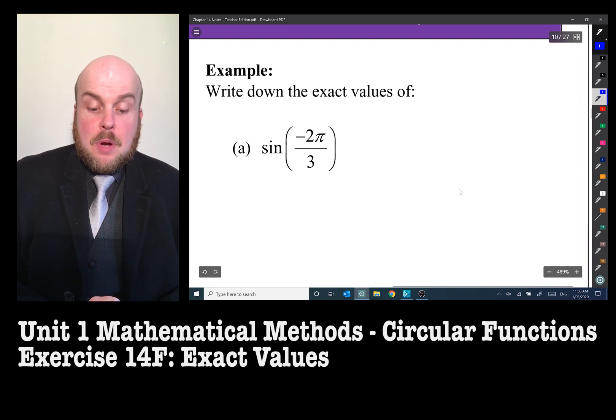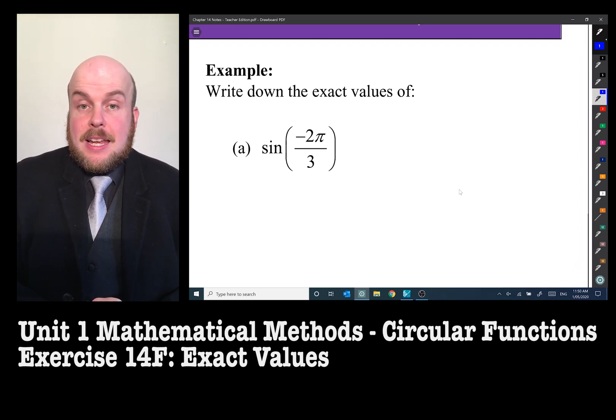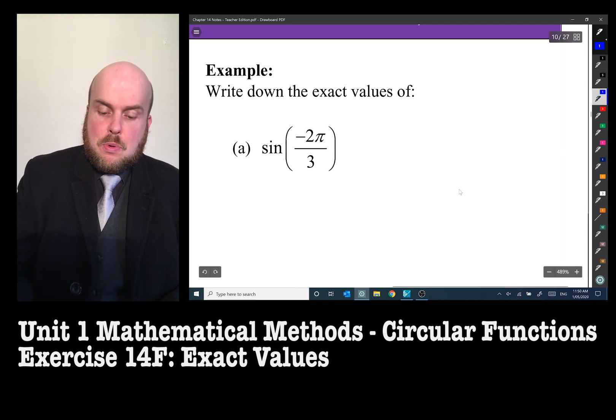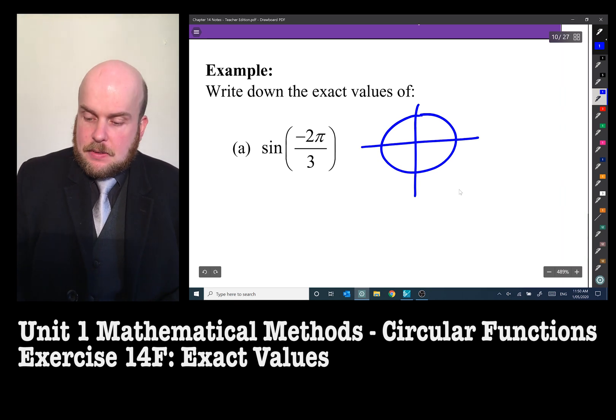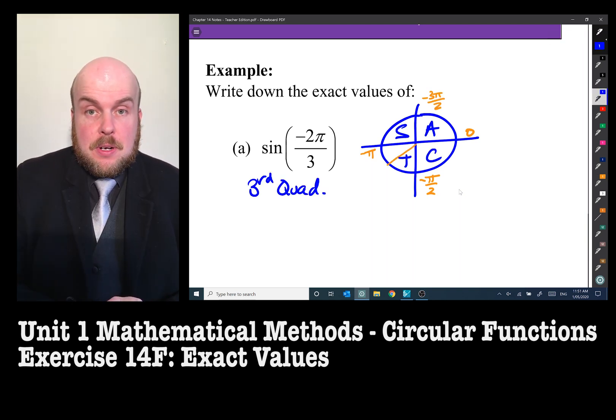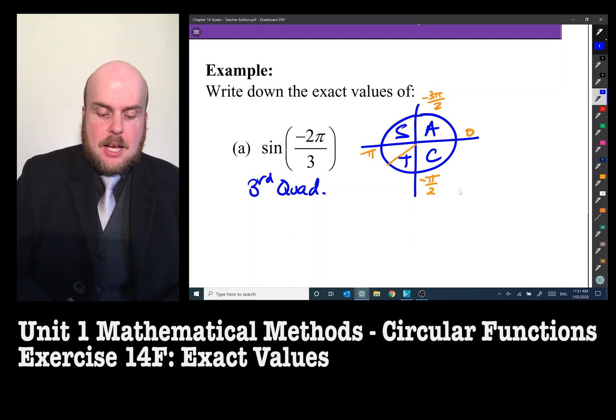For example, write down the exact values of sine negative two pi on three. So for a start, we need to identify which quadrant that's in. It's negative, so it's going backwards. So there's zero, negative pi on two, negative pi, negative three pi on two. So it's in the third quadrant, and knowing the values of which quadrant is positive which one is negative, I know that sine in the third quadrant is negative.